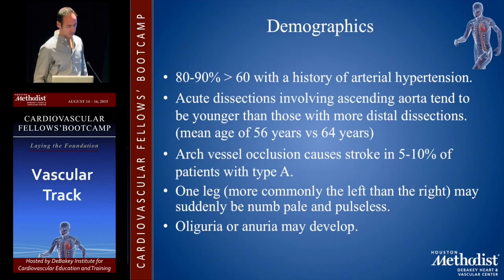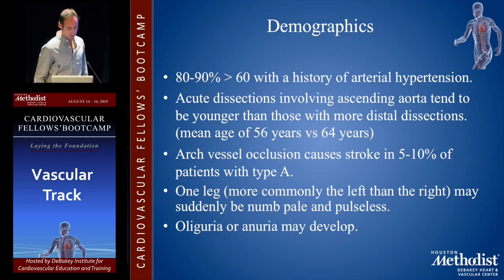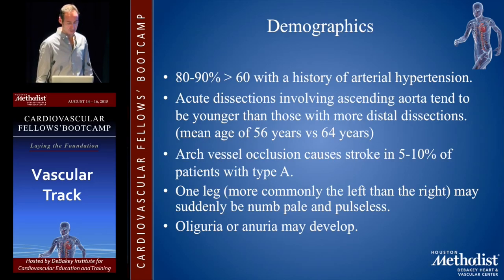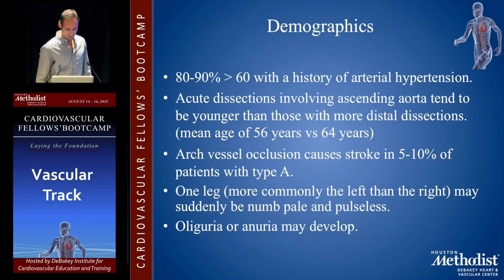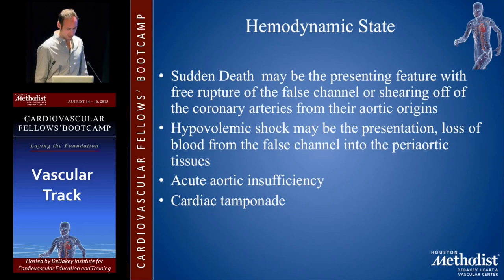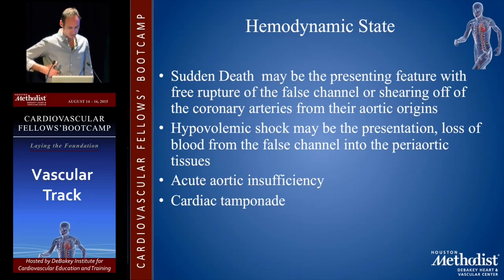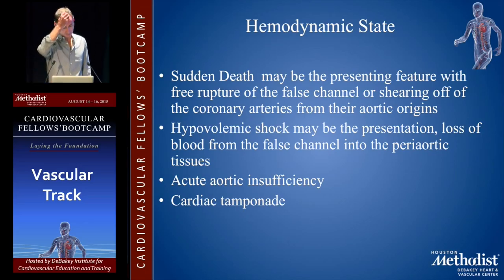As far as demographics, 89% of patients are greater than 60 with a history of arterial hypertension — that's what you typically see come into the ER. Acute dissections involving the ascending aorta tend to be younger, with mean age 56 for more distal dissections versus 64 for proximal. Arch vessel occlusion can cause stroke in up to 5-10% of patients with type A dissections. The more commonly involved leg is the left. Oliguria and anuria may develop with renal compromise.